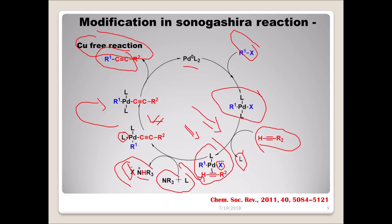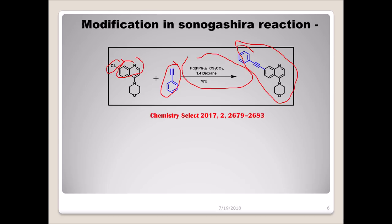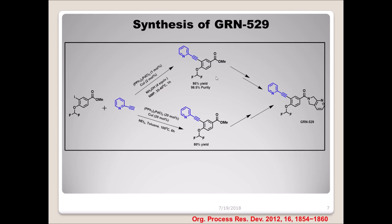A recent example reported in 2017 shows no copper reagent. We have a chloride on a quinoline moiety reacting with a simple alkyne, forming a carbon-carbon bond where the chlorine was positioned. The reaction is performed at room temperature using palladium tetrakis(triphenylphosphine), cesium carbonate as base, and 1,4-dioxane as solvent.